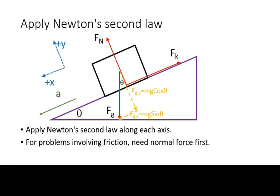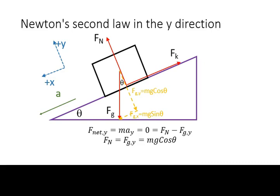Now, we are ready to apply Newton's second law. Because this is a problem that involves friction, it is important to first get an expression for the normal force. The normal force is along the y coordinate, along which there is no acceleration. Hence, in this case, the magnitude of the normal force must equal the magnitude of the y component of the force of gravity.